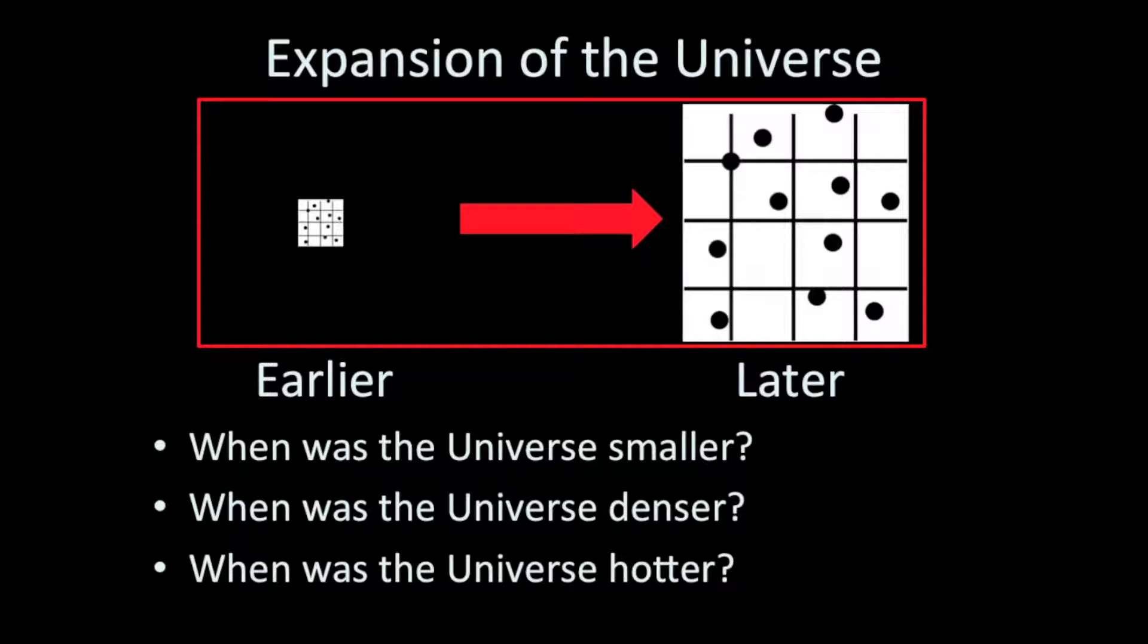When was the universe hotter? For a volume of space that contains matter-energy in it, the smaller the volume, the denser it will be, and therefore the hotter it will be. So the universe was hotter earlier in time.